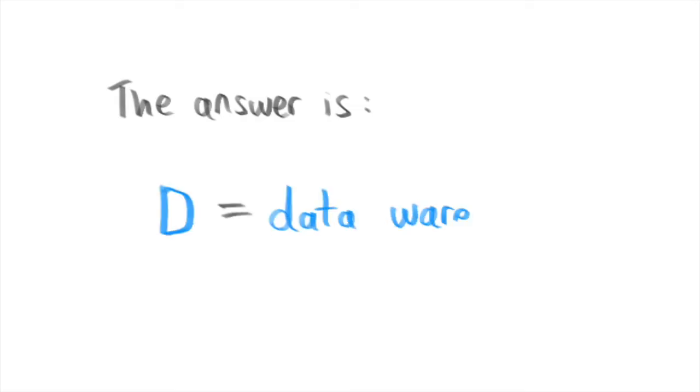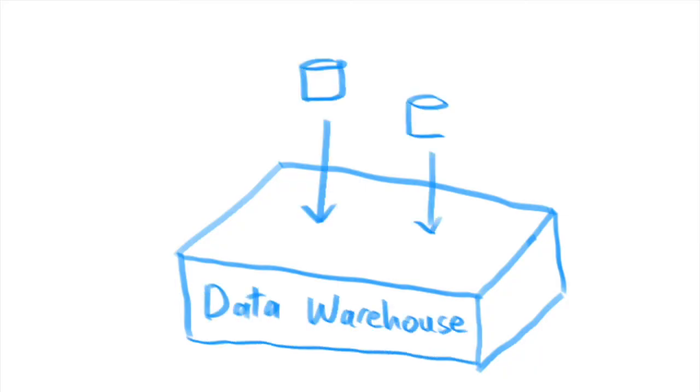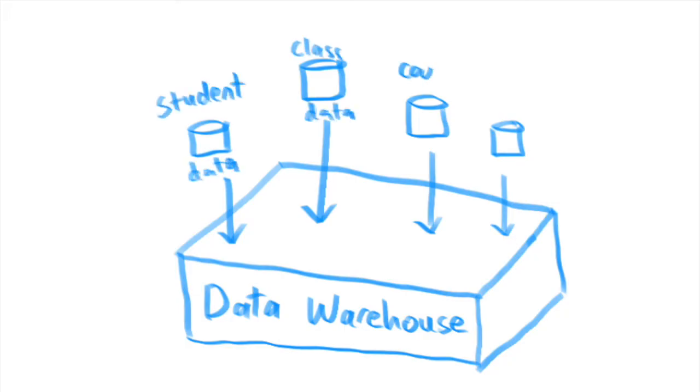Now the answer is D for data warehouse. Data warehouses are used to store aggregated data that is generally more high level than the data found in a database and usually less real-time for analytical purposes.